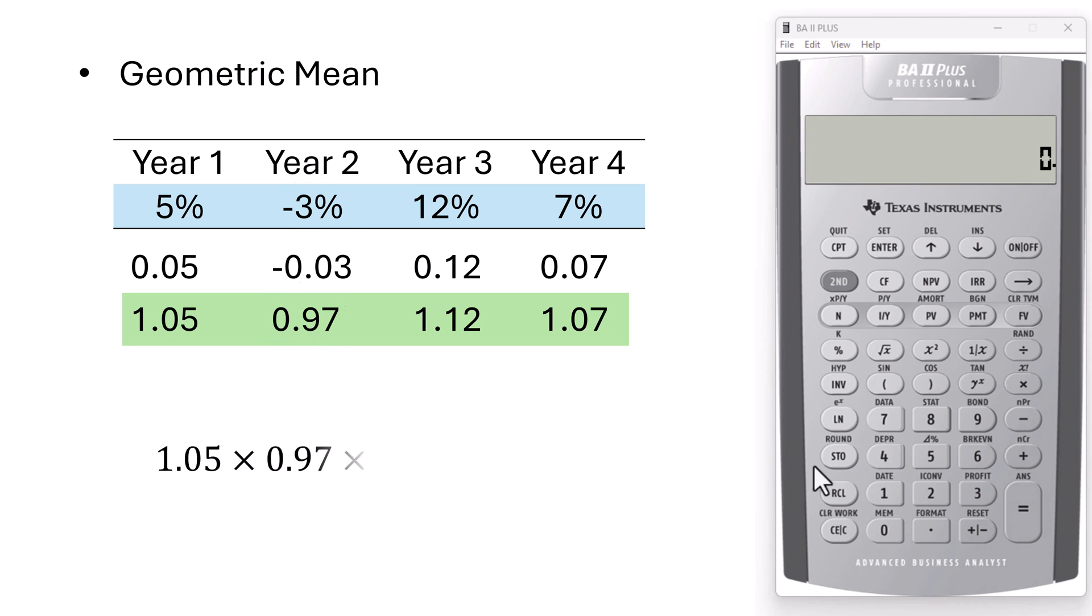Next we multiply these values: 1.05 times 0.97 times 1.12 times 1.07 equals. And that gives 1.22057.